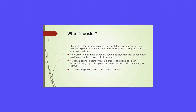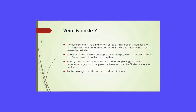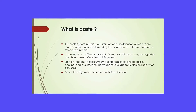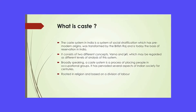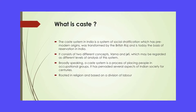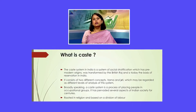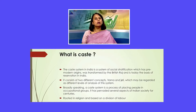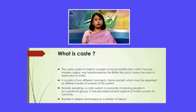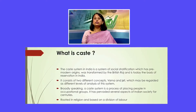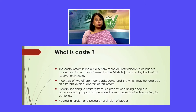The caste system in India is actually a system of social stratification which has a pre-modern origin. The way that we know the caste system today was actually because of the Britishers. The Britishers in 1901 for the first time conducted a census in the Indian population, and that census was a caste-based census. Broadly, the caste system is a process by which we place people in different occupational groups, and it has pervaded several aspects of Indian society for centuries, rooted in religion and based on a division of labour.